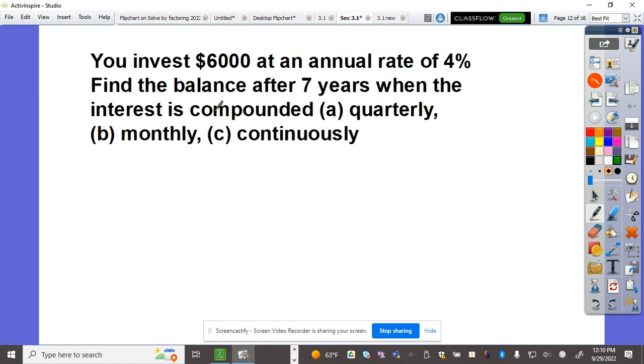You invest $6,000 at an annual rate of 4%. Find the balance after 7 years when the interest is compounded quarterly, monthly, and continuously. So we have three problems in one. P = 6,000, rate is 4%, T = 7. Quarterly N = 4, monthly N = 12.